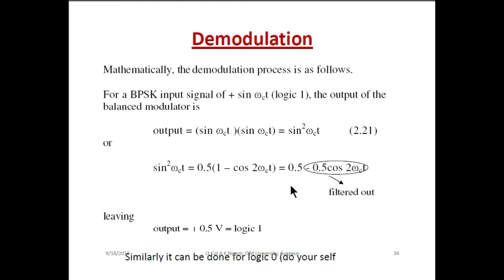Mathematically, the demodulation process works as follows: for BPSK input signal +sin(ωct) representing logic 1, the output of the balance modulator is sin(ωct)·sin(ωct) = sin²(ωct). Since sin²(ωct) = (1/2)(1 − cos(2ωct)), this gives 0.5 − 0.5·cos(2ωct). The term −0.5·cos(2ωct) is filtered out by the low-pass filter, and the remaining output of 0.5 V is treated as logic 1. Similarly, this can be done for logic 0.